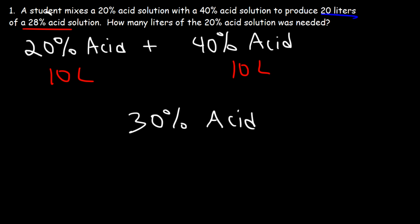But the mixture doesn't have a concentration of 30% — it's less than 30, it's 28. So therefore, did we mix more of the 20% acid solution or more of the 40% acid solution? Since the average is closer to 20, that means we mixed more of the 20% acid solution than the 40%. Therefore the amount of the 20% acid solution required has to be more than 10 liters, and the amount of the 40% acid solution has to be less than 10. But let's go ahead and get the exact answer.